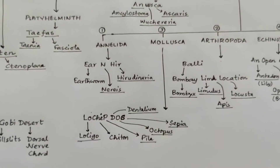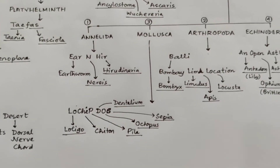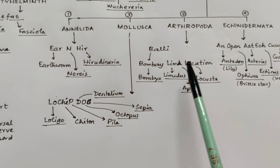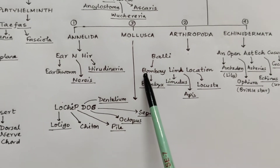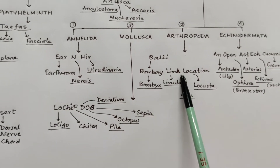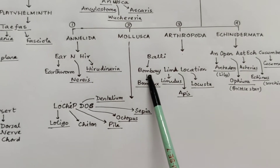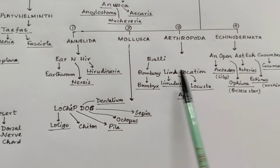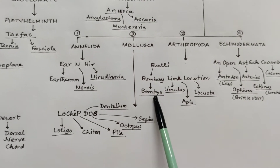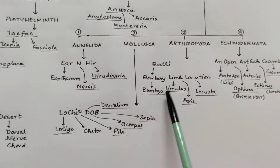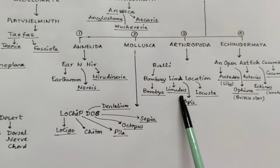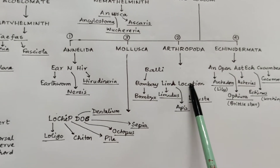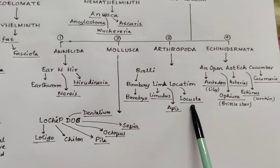Now coming to the second one — Arthropoda, which is the largest phylum. We have to remember 'Bombay Lima Location.' Bombay is a city in India, Lima is the capital of Peru. For Bombay, we have Bombyx, meaning silkworm. 'Lim' for Limulus. 'A' for Apis. And 'Location' — Locusta, meaning locust.